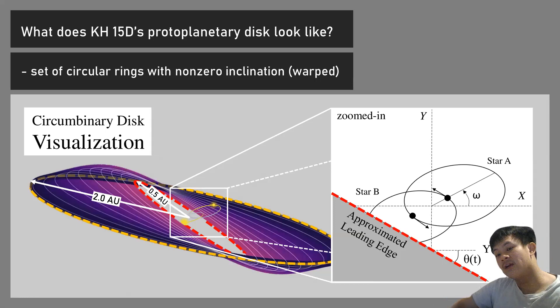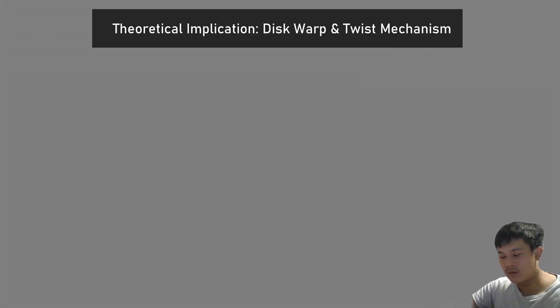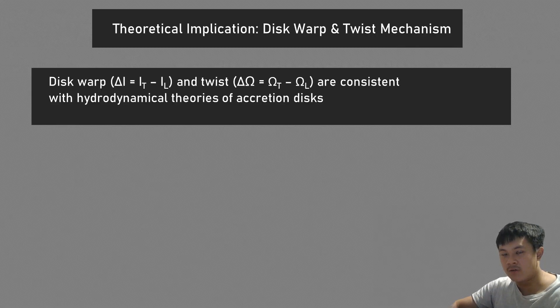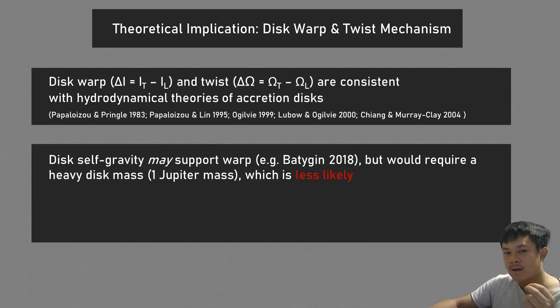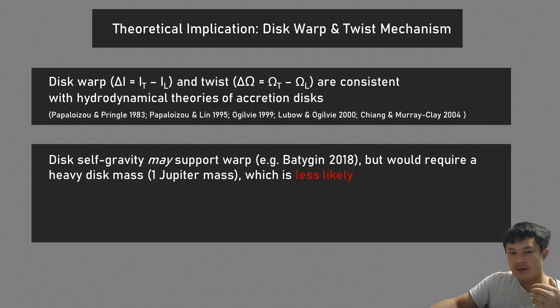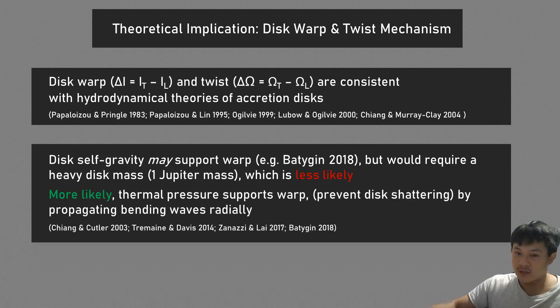The theoretical implications of the disk warp mechanism: the disk warp, delta i, and this twist, delta omega, are consistent with hydrodynamical theories of accretion disks. The warp can be controlled by self-gravity, which may support it, but that's less likely. More likely is thermal pressure.